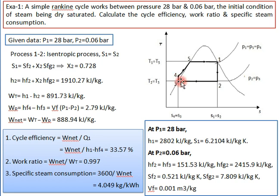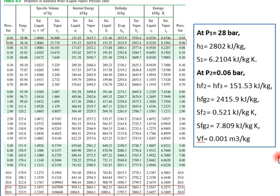For the whole calculation we need the values of h1, h2, h3, h4, hf3, and hf4. We find these from the steam table. The steam is given as dry saturated, so we choose the properties of saturated water.